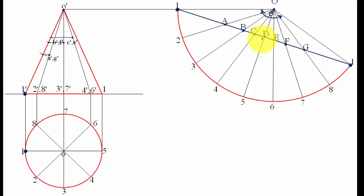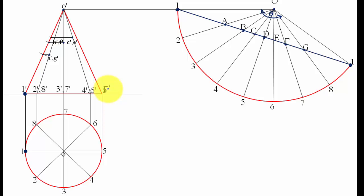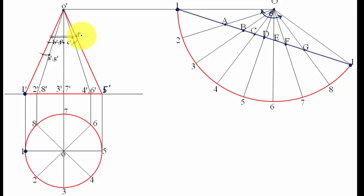Finally, only point D remains. Point D is on generator O5 (not point one — this is point five-dash, to be precise). Generators O1 and O5 are both parallel to the XY line, so their front views O'-1' and O'-5' already reflect their true lengths. We take OD as the radius and cut an arc directly on the true length to get point D.